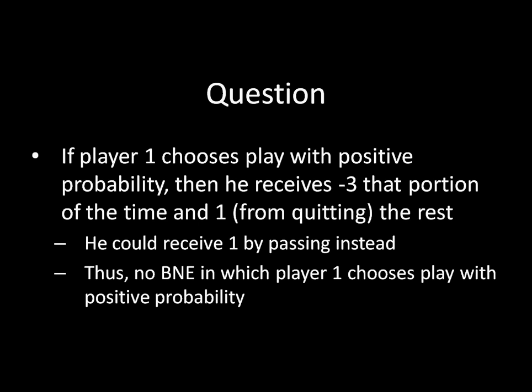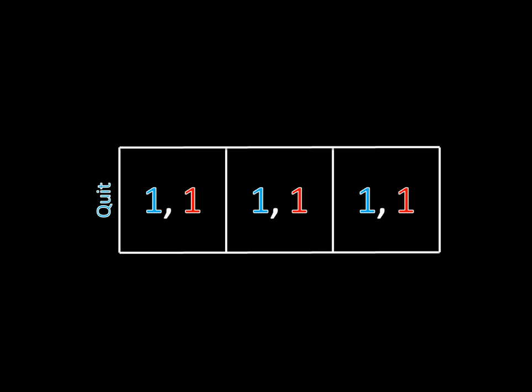We have shown exactly what strategy player 1 must choose in any Bayesian Nash Equilibrium of this game — he must choose quit. What player 2 does, you could figure that out on your own. But it doesn't matter for answering our original question of whether more information is always better. We can stop here and conclude that more information is not always better, because we know player 2's payoff for this game: it's a payoff of 1. Without knowledge of the coin flip, player 2 receives a payoff of 2; with knowledge of the coin flip, she receives a payoff of 1. Her payoff has diminished.